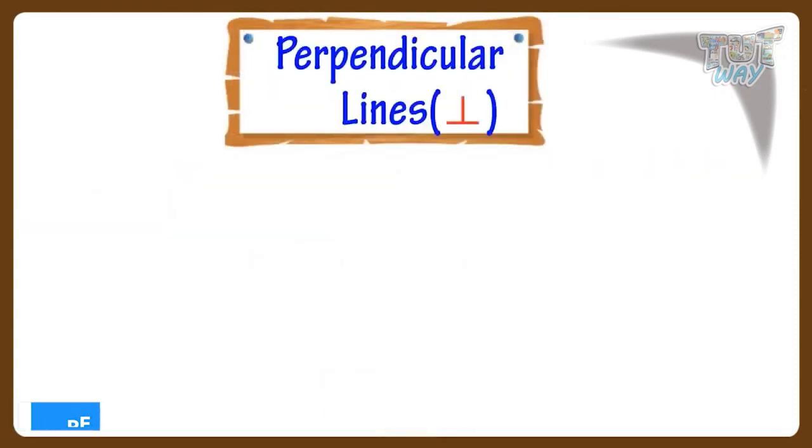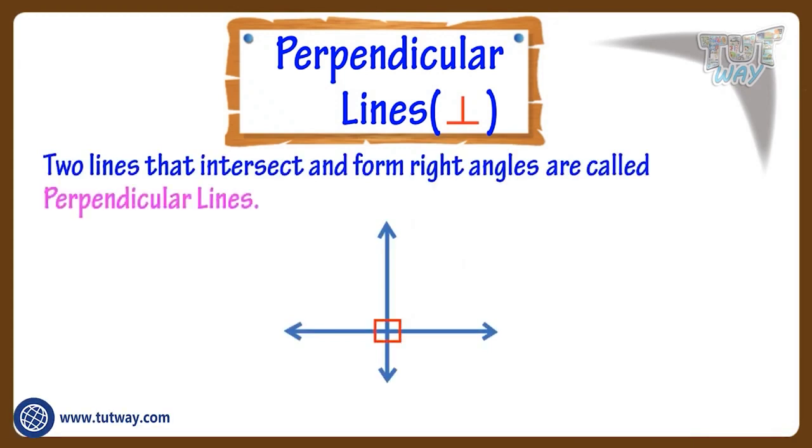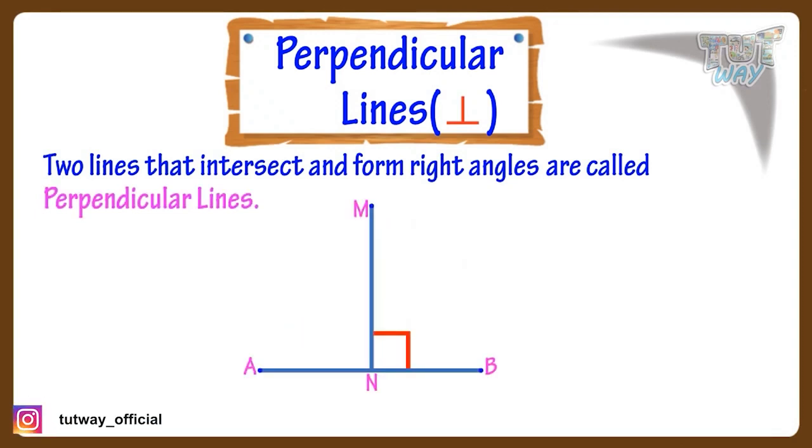Now let's see what are perpendicular lines. Two lines that intersect and form right angles are called perpendicular lines. Here MN is perpendicular to line AB. That is, the angle that is formed between the lines AB and MN is a right angle, or a 90 degree angle.